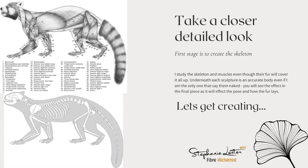Even though with the long fur you're less likely to see the muscles, I will get the muscles right because that will help me pose him properly. So that's where I've got to in my process. My next stage is to get the armature done and get creating. I will share back with you at the next stage of the process — see you soon.